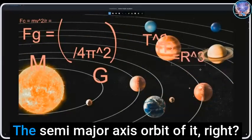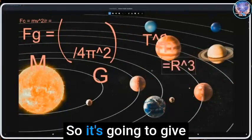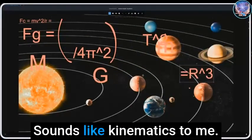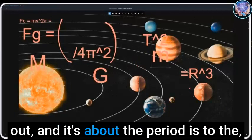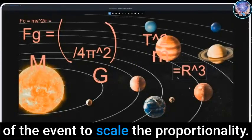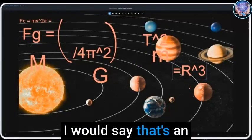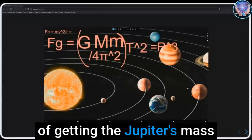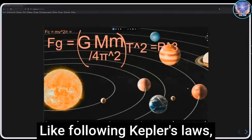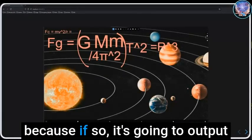But when you apply these equations with the mass of the sun, gravitational influence of this body here in relation to the periodicity, it's going to give you the orbital, the semi-major axis orbit of it. So it's going to give you the distance of it. Sounds like kinematics to me, since the causal mechanism is canceled out and it's about the periodicity of the event to scale the proportionality. I would say that's an accurate assessment.